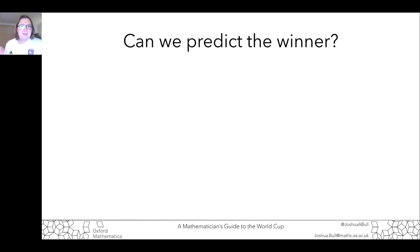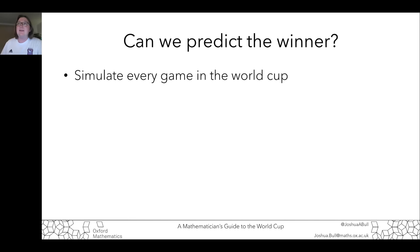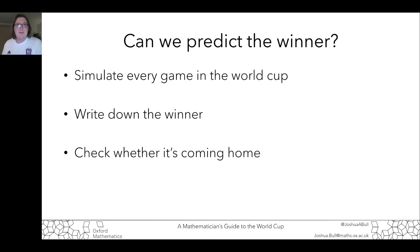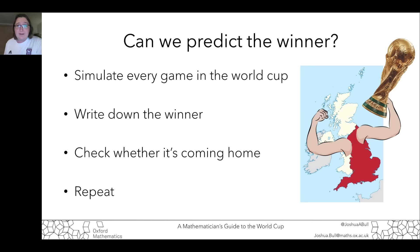So where do we start? We're interested in working out who's going to win the World Cup. We've got a 1 in 32 chance of being right, but we can do better than that. We can predict basically every game in the World Cup, take them one by one, and see who I think is going to win. At the end of that, I'm going to write down the winner of the World Cup, and then check whether that winner is England, which will be a good reality test for whether the model's working.